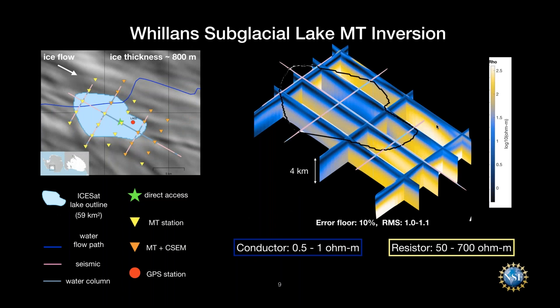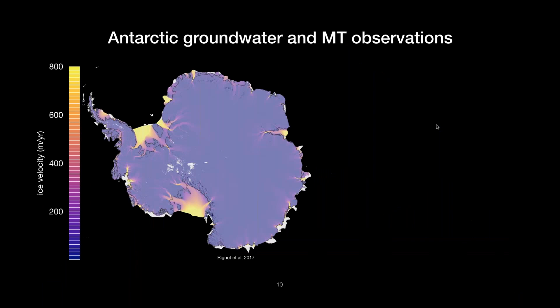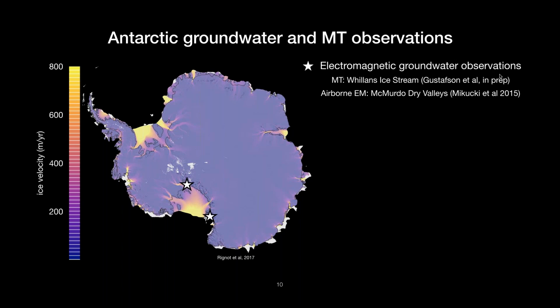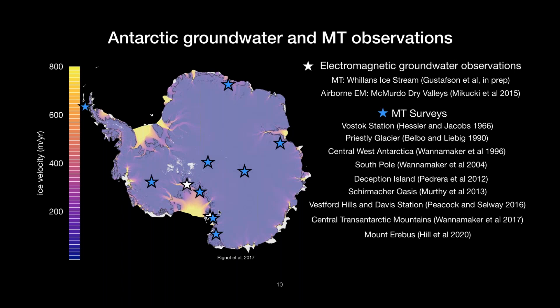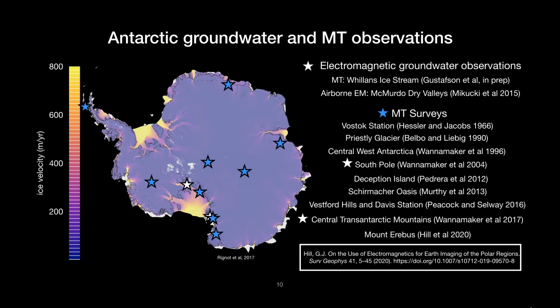This result indicates that there's probably salty groundwater throughout the Willens Ice Stream and perhaps in other Antarctic ice streams as well. Going back to Antarctica, we have two places where electromagnetic data has been used to observe groundwater: our survey in the Willens Ice Stream and in the dry valleys of Antarctica, where airborne EM was also used to find salty groundwater. Other MT surveys completed in Antarctica also saw high conductivities in the near surface, suggesting additional groundwater. There's a great review paper about electromagnetic studies in polar regions by Graham Hill, which I highly recommend.